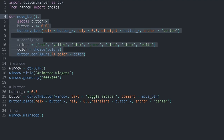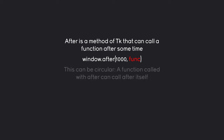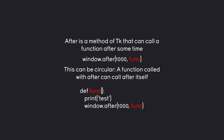Now we have to figure out how to make tkinter do the animation work for us. For that we need the after method. After can call a function after a certain amount of time: window.after(time, function). The amount of time is in milliseconds, so 1000 would be one second. What is really important is that this can be circular — a function called with after can contain after itself. In this case, a function that prints 'test' and then calls itself via after will run forever.